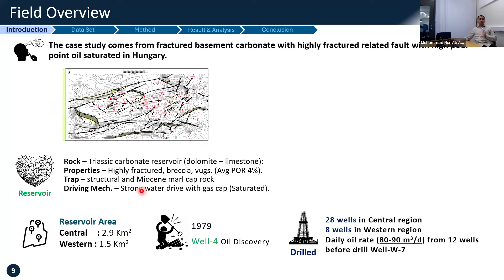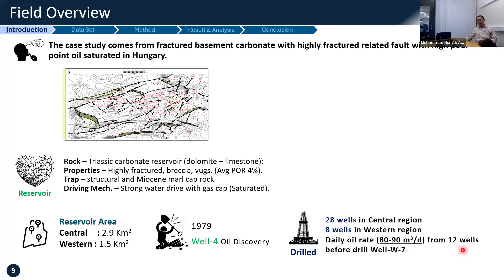The trap itself is a combination structural and stratigraphic, and the driving mechanism is a really strong water drive. The first discovery well, number 4, is located in the most southern part of the field. Now there are more than 36 wells drilled. Currently, as of 2022, the production rate is only around 80–90 cubic meters per day from 12 wells.